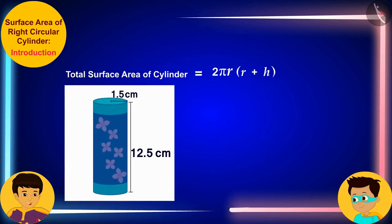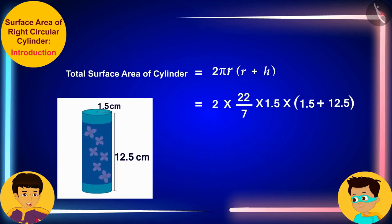The height of your cylindrical packet 12.5 cm and the radius of its base 1.5 cm in the formula of the total surface area of the cylinder, and then solve this equation.